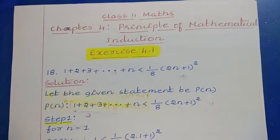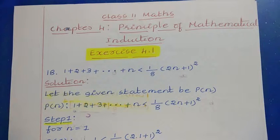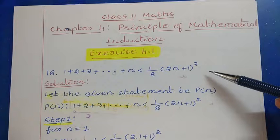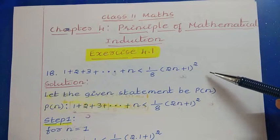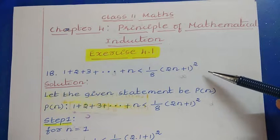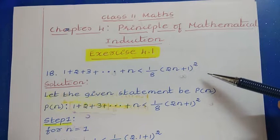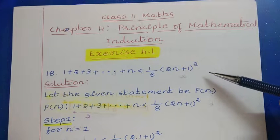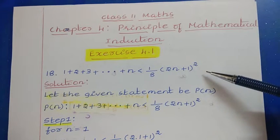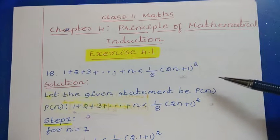Question number 18: 1 plus 2 plus 3 plus ... up to plus n, less than 1/8 into (2n+1) whole square. This particular problem is different from question numbers 1 to 17, where in the earlier problems we had the equal sign and by taking the LHS and comparing with the RHS we used to check the statement. But here we can't do such things — there is a slight change in the method.